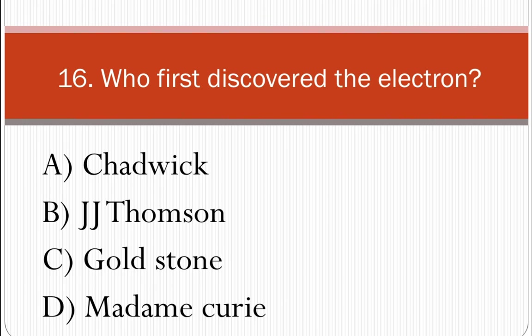Who first discovered the electron? The options are Chadwick, J.J. Thomson, Goldstein, or Madam Curie. The answer is J.J. Thomson.